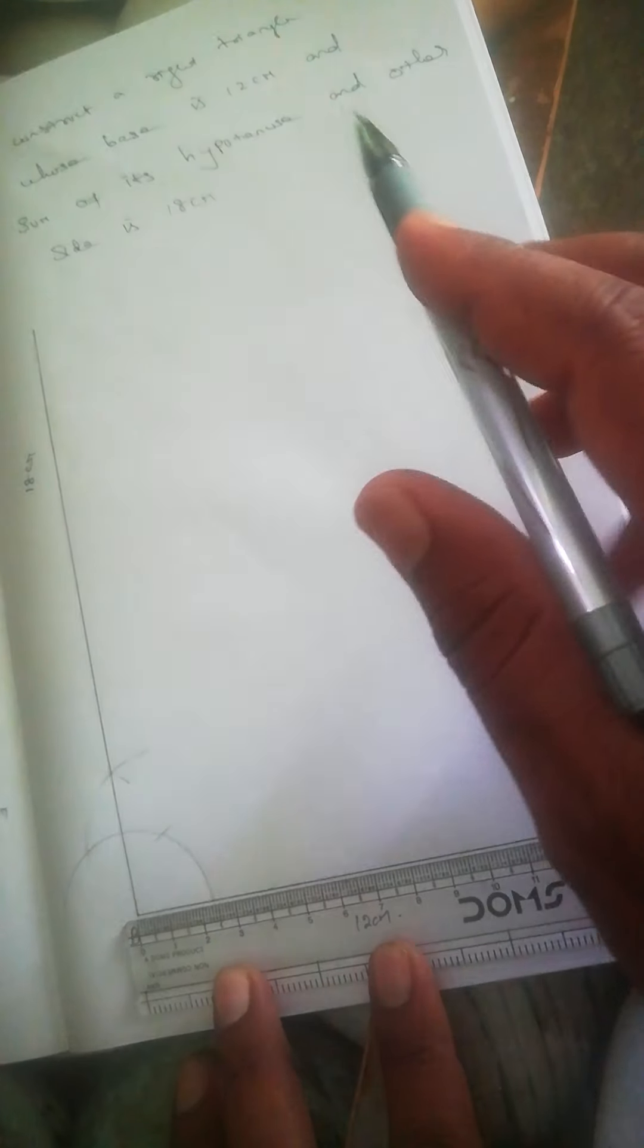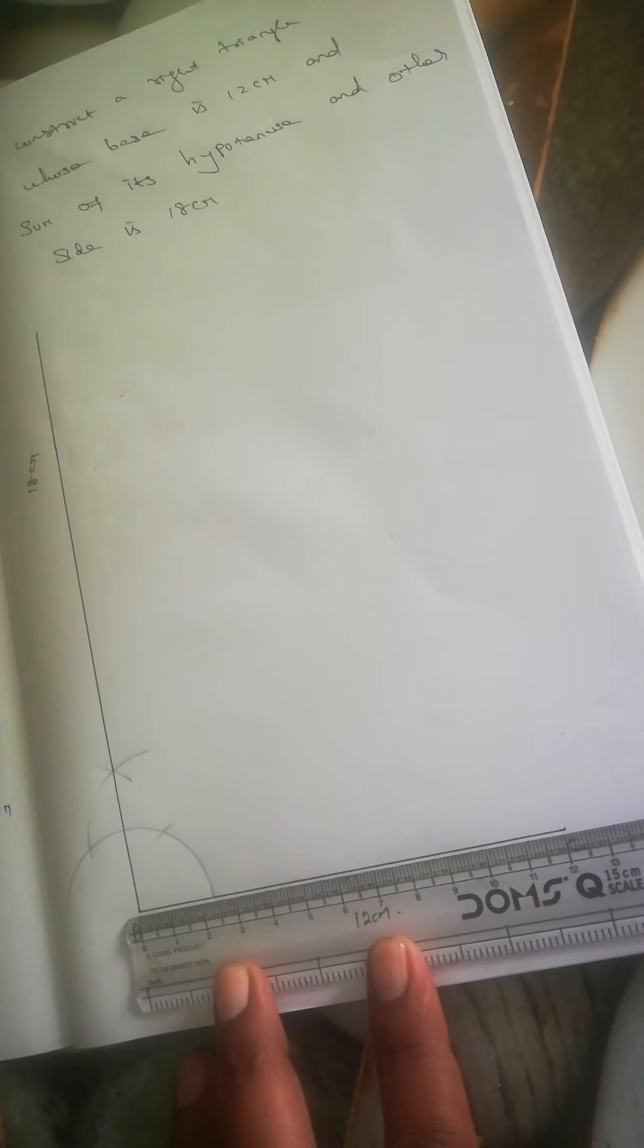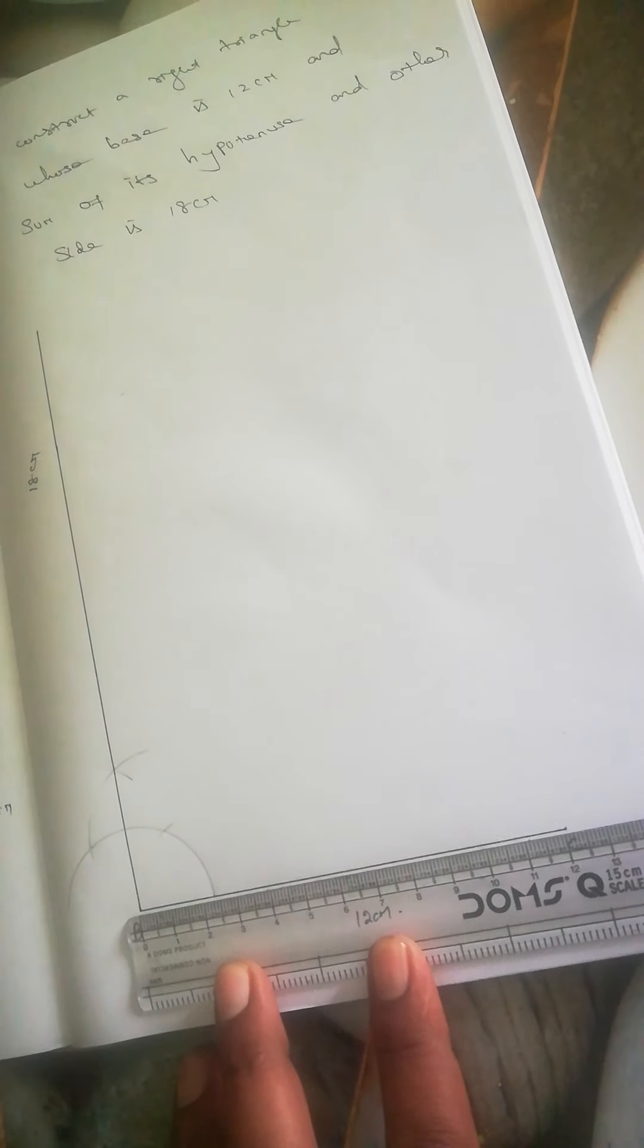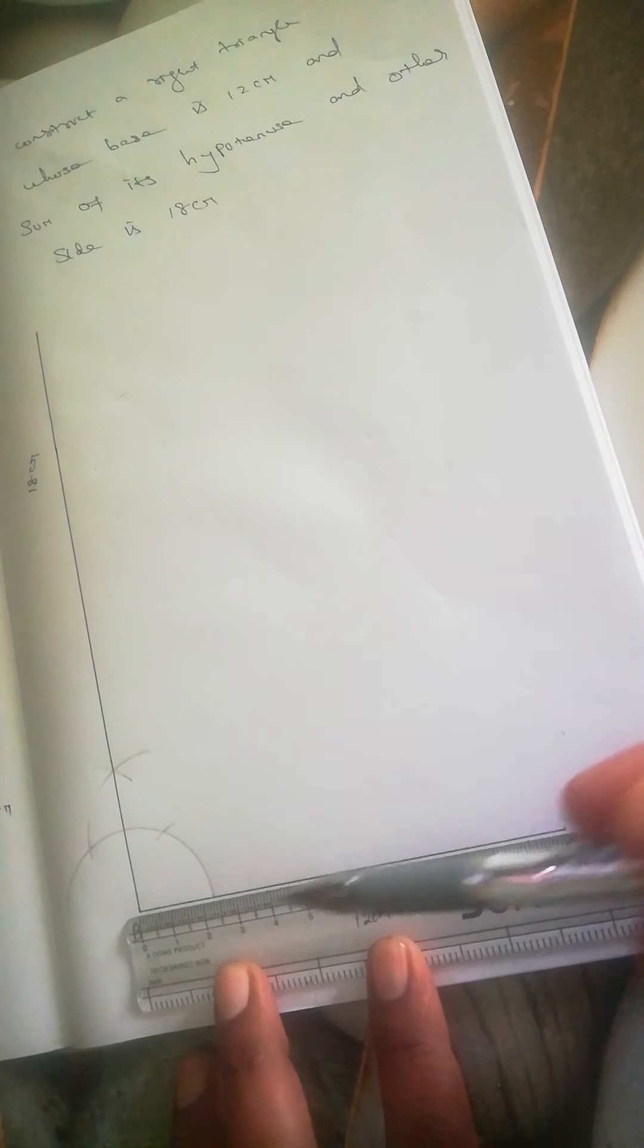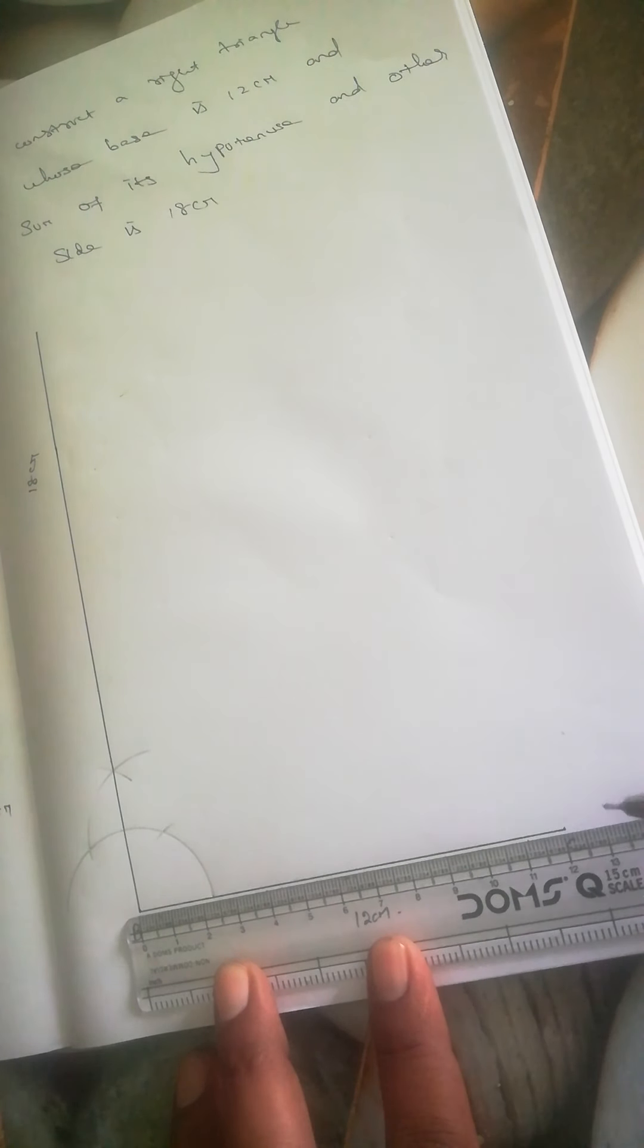Question 5: Construct a right triangle whose base is 12 centimeters and sum of its hypotenuse and other side is 18 centimeters. First, draw the base of 12 centimeters.